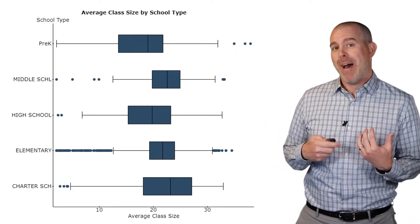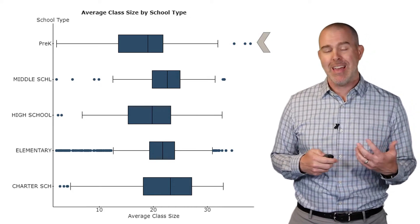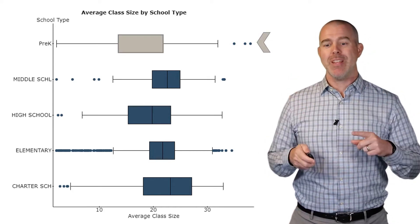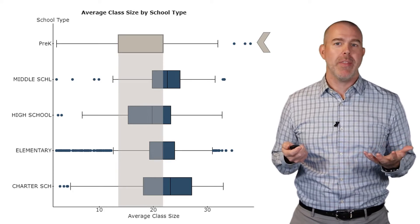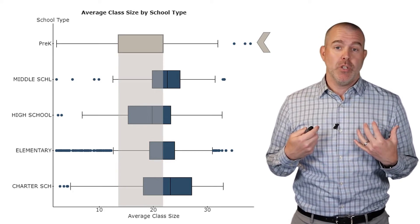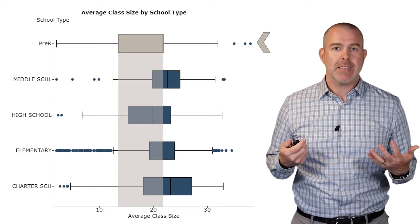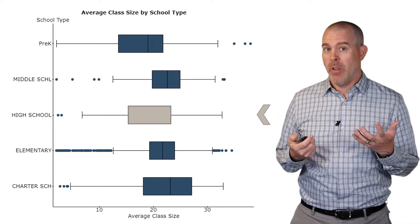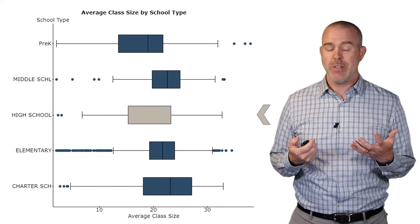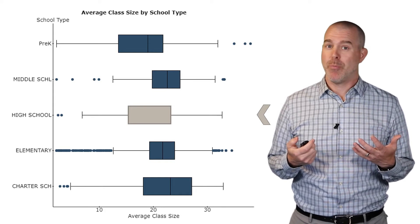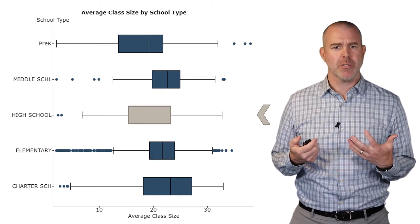Now some interesting things that at least pop out at me: if you look at the pre-k and look at that middle 50%, it tends to be much lower than the other ones, which seems good to me. We want lower average class sizes in the preschool, though the high school is pretty similar. I mean, it seems to be the lowest of the rest of them, except for pre-k, which I found a little surprising.